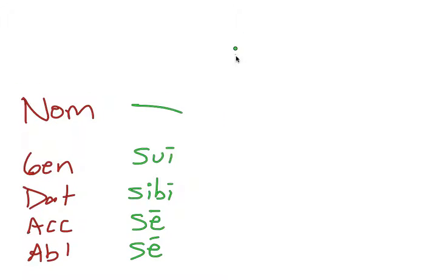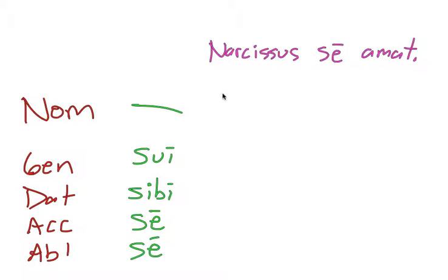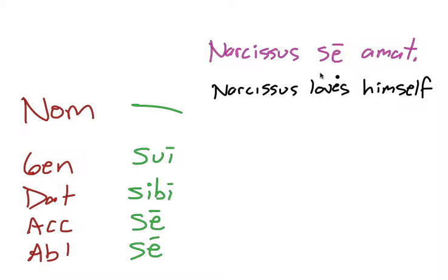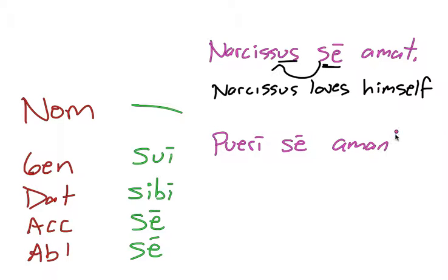Let me give you a couple examples of what this means. Here is a sentence in Latin: Narcissus — our famous dude who falls in love with his own reflection — Narcissus se amat. This translates as 'Narcissus loves himself.' The se refers back to the subject. Now I could make this plural: Pueri se amant — 'the boys love themselves.'